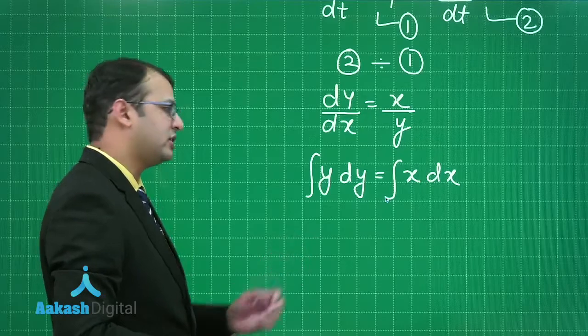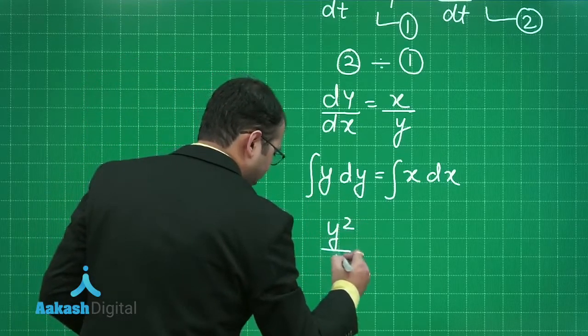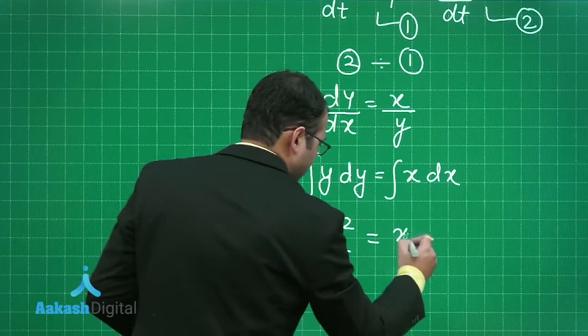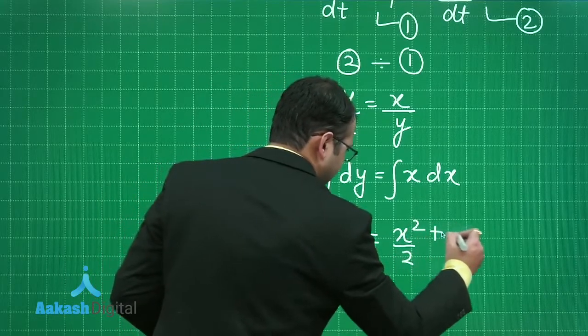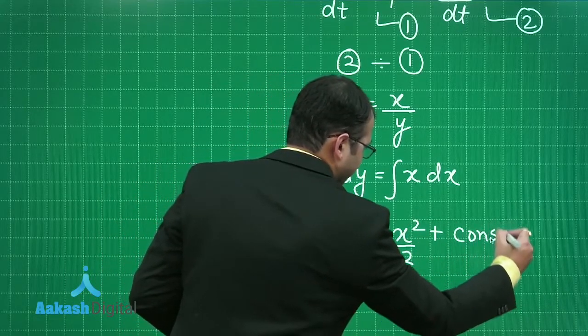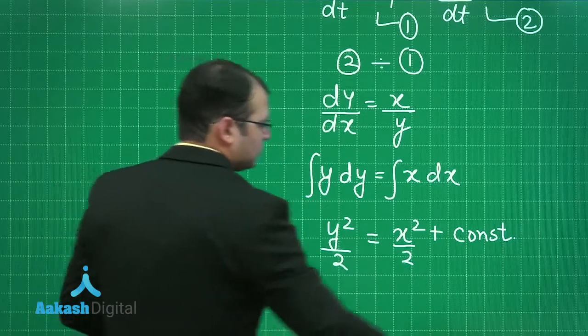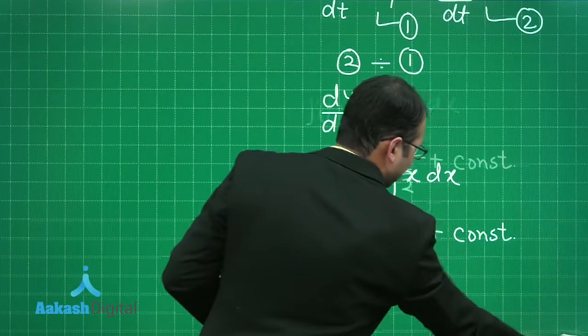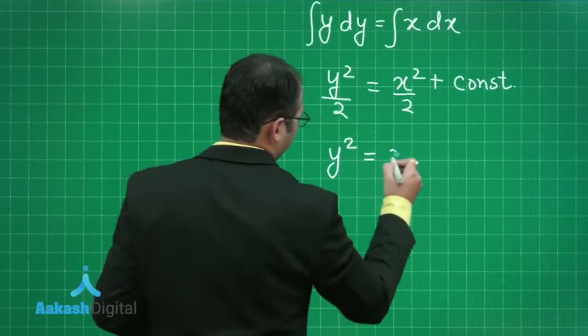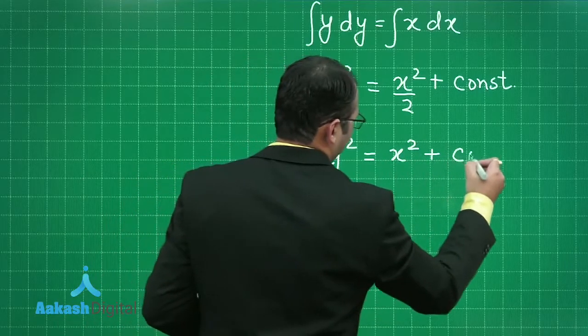Since there are no limits, then we have to put a constant there. This integration will be y square by 2. This will be equal to x square by 2 plus a constant. Solving this, you will get the equation as y square equals to x square plus a new constant.